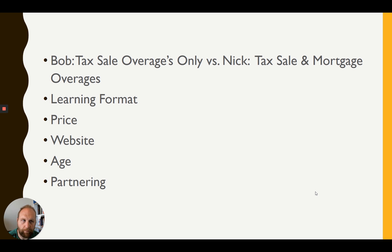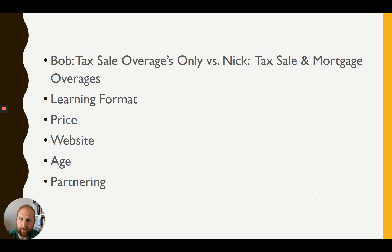Third, let's talk about price. They're almost identical, but not quite. Bob's is $1,500 paid upfront, or three payments of about $600 — so $1,800. My program is $1,299 upfront. We also have a two-month and three-month option; the three-month option is three payments of $499-$500. So mine is a little more economical, but not drastically cheaper.